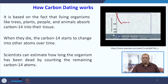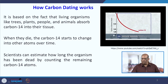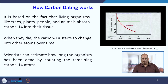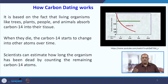After 5730 years it reduces to half, after another 5730 years it becomes one-fourth, then one-eighth, and so on. Scientists use this information to calculate the approximate age of a fossil, animal, plant, or tree that absorbed this carbon.